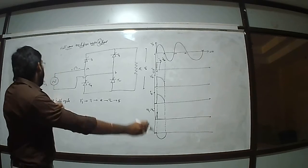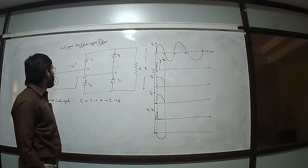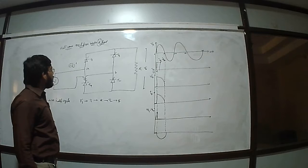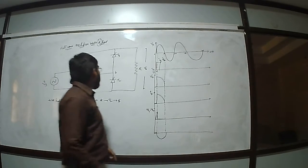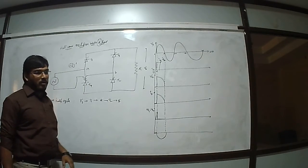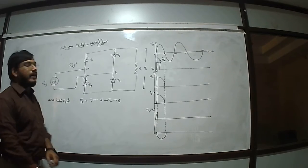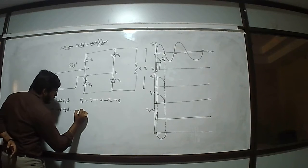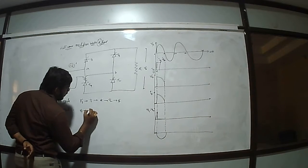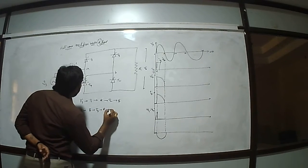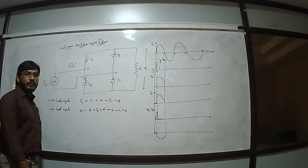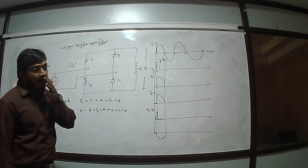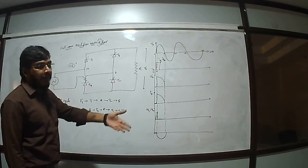During the negative half cycle, the vice versa operation occurs: the minus terminal connects to the cathode of T4 and the positive to the anode of T1. Now thyristors T1 and T2 are in reverse bias operation, and thyristors T3 and T4 are in forward operating mode. The path for the negative half cycle is: Vs → B → T3 → R → T4 → A → Vs.